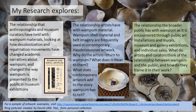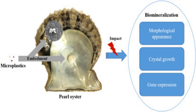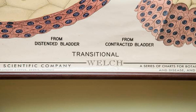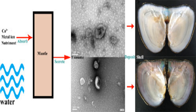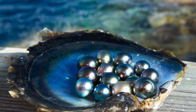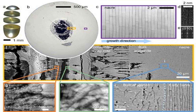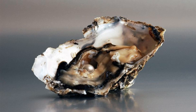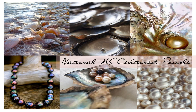When an irritant, such as a grain of sand or a tiny organism, finds its way inside the shell of a mollusk, a fascinating chain of events is set in motion. The mollusk's natural defense mechanism comes into play, aiming to protect its delicate tissues from harm. In response to the irritant, the mollusk begins to secrete a substance called nacre, also known as mother of pearl, layer by layer. This gradual deposition of nacre ultimately forms the mesmerizing pearl that we admire.